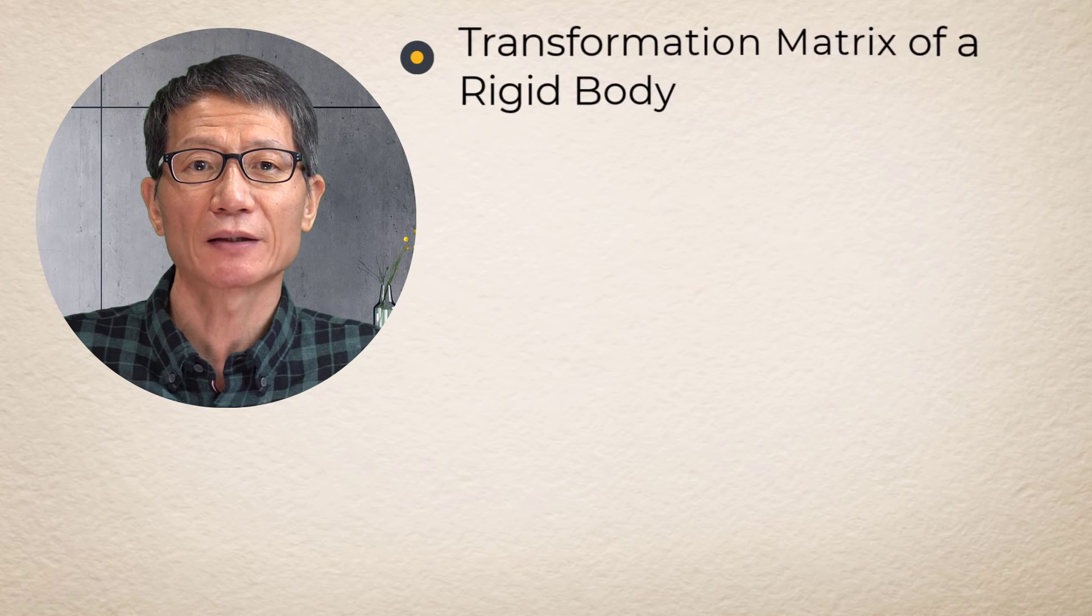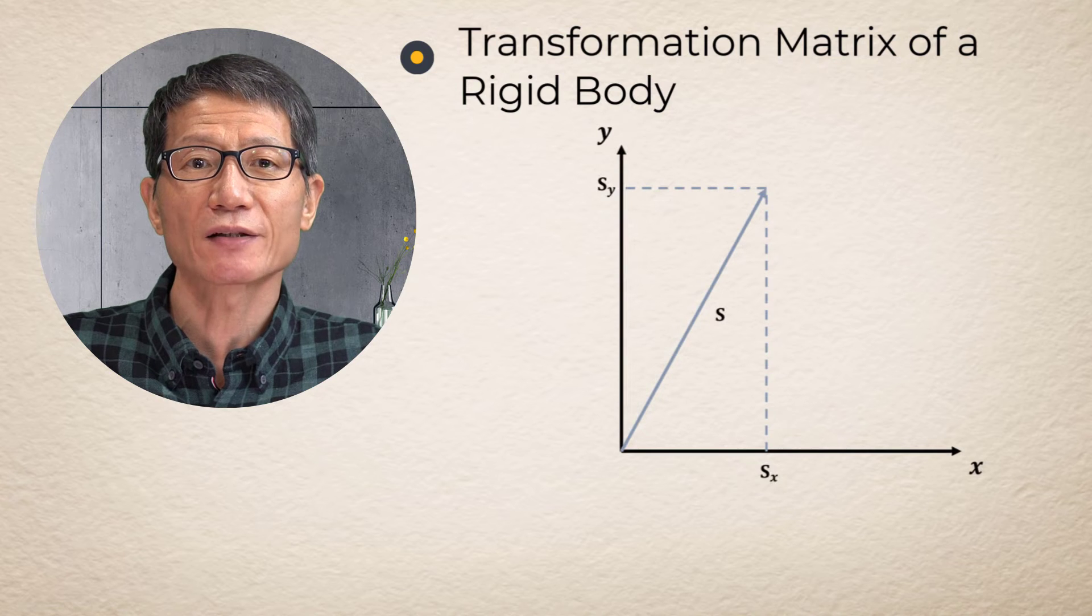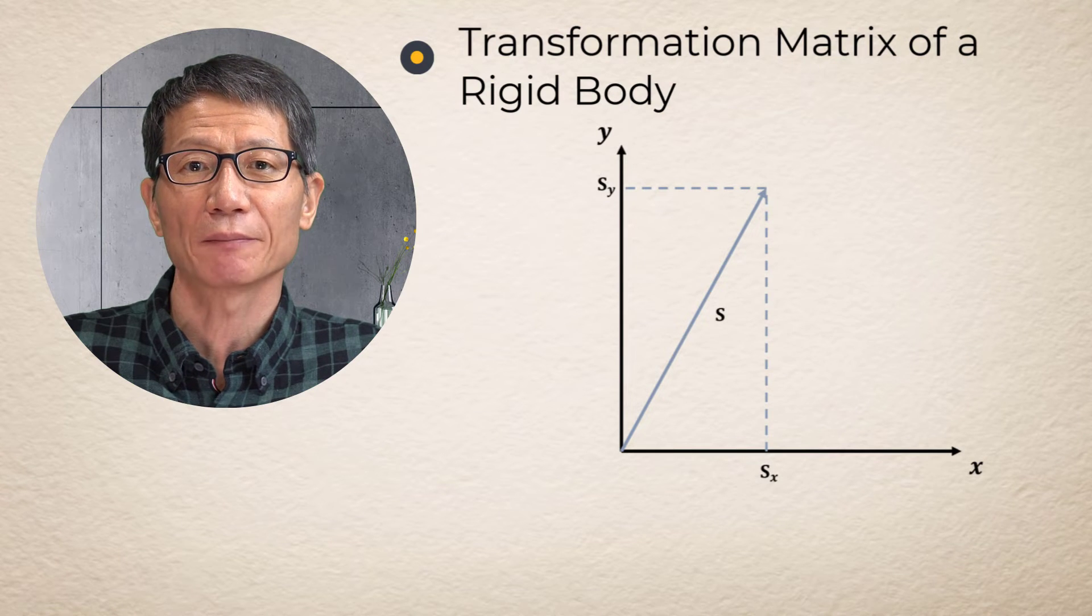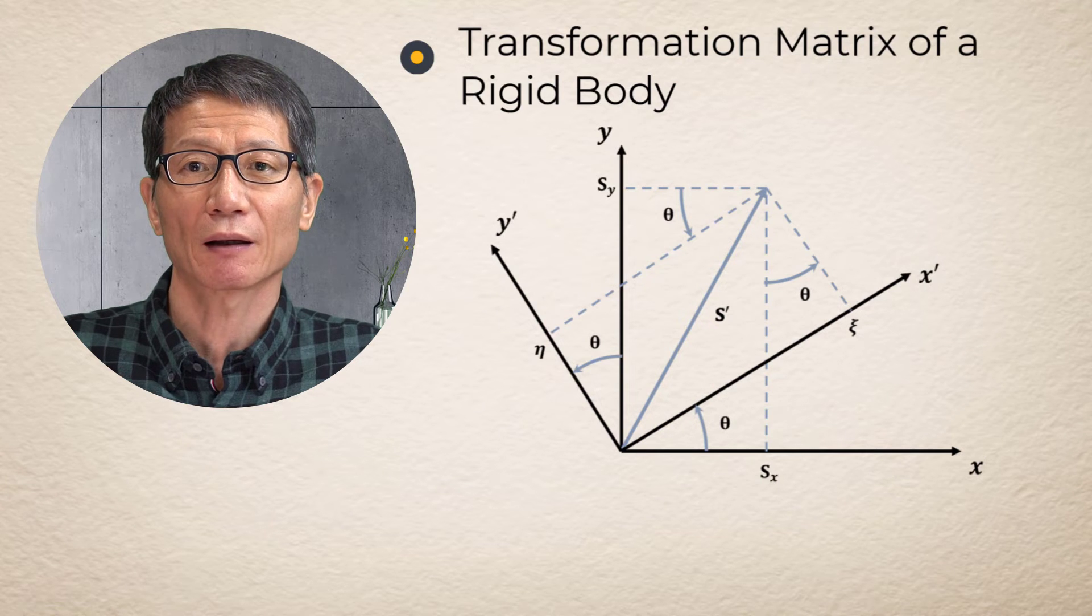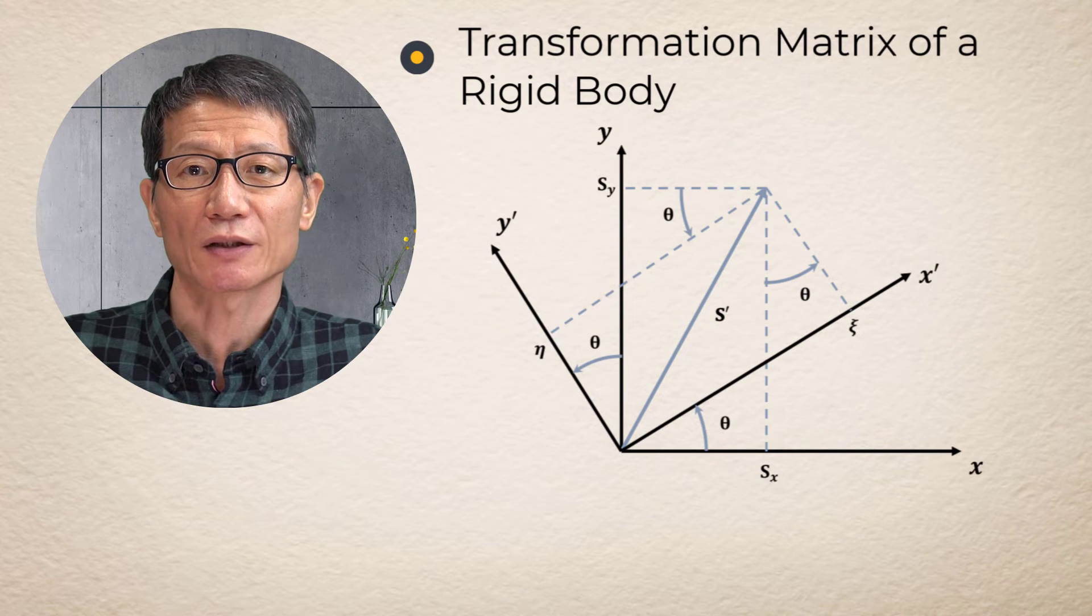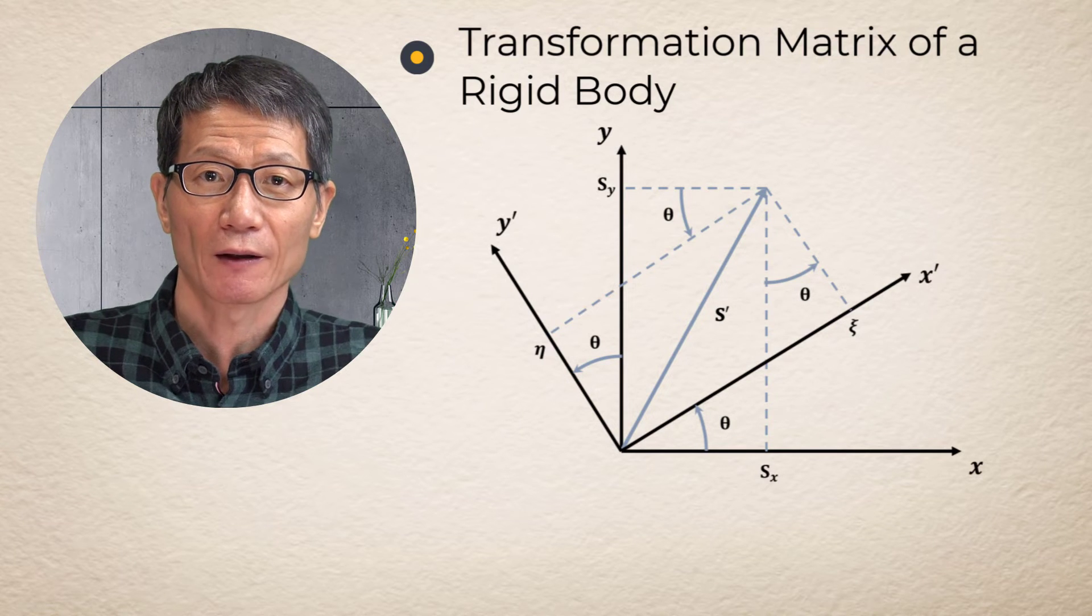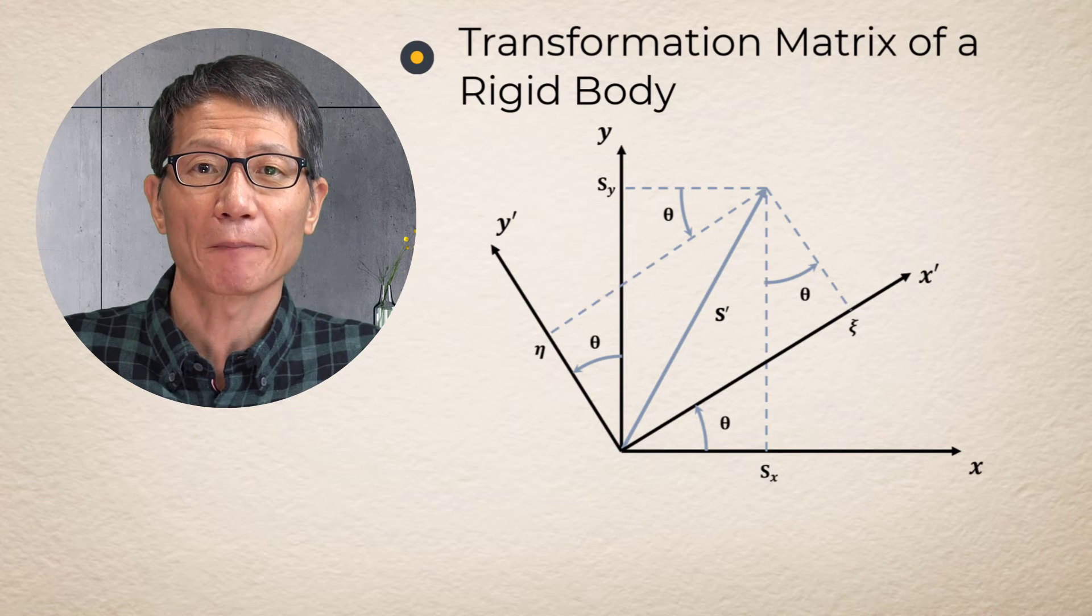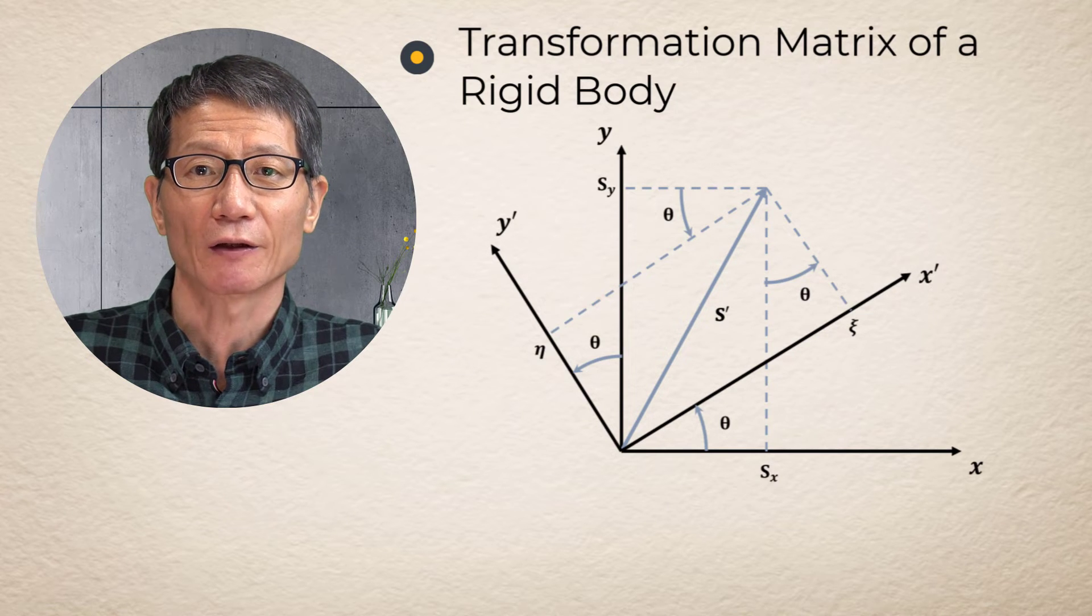Transformation matrix of a rigid body. It is often necessary to express a vector in many different reference frames. In order to express a vector in two different coordinate systems, we need to carry out the coordinate transformation. The coordinate transformation matrix can be developed by geometric relationship as in this figure.